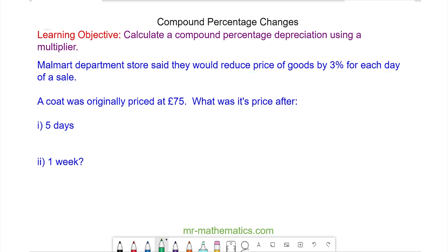So to begin with we need to calculate our multiplier. The original percentage is 100% and this is £75. The price of goods is reduced by 3% so we're taking away the 3% from the original.